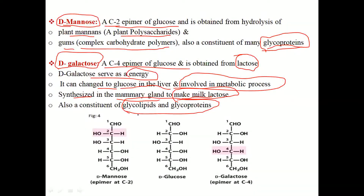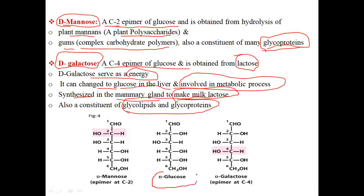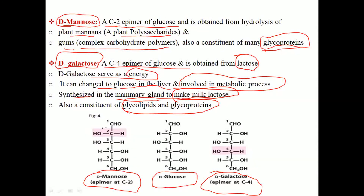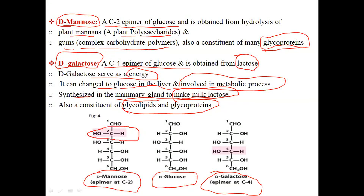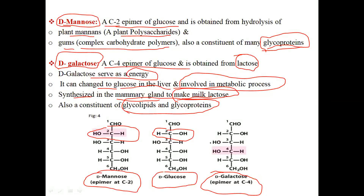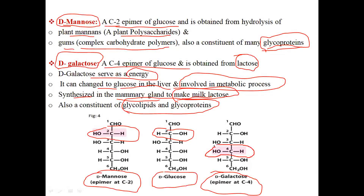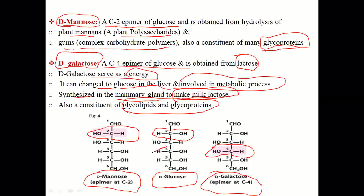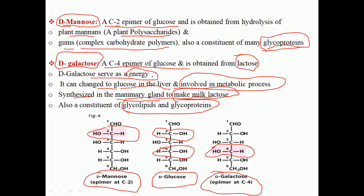Galactose is also a constituent of glycolipids and glycoproteins — it combines with lipids and proteins to form these molecules. In Figure 4, you can see glucose, mannose, and galactose. All three have the same formula and same structure except at the epimer carbons: mannose is the C2 epimer of glucose, so the configuration of H and OH at carbon two differs from glucose; galactose is the C4 epimer, so the configuration at carbon four differs. These are important epimers of glucose.